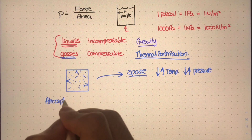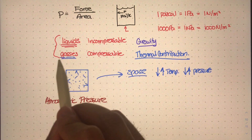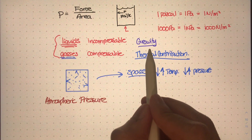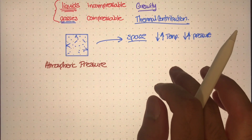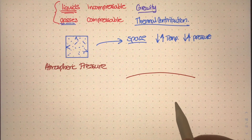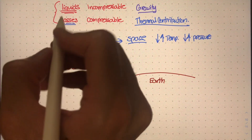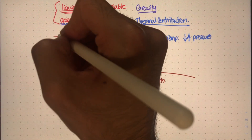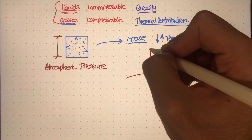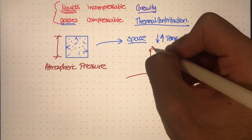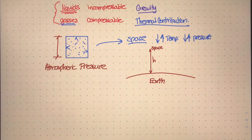For atmospheric pressure: I just told you that for gases, gravity really doesn't play too much of a factor if the container is relatively small. But if we look at our planet Earth — here is the surface of the Earth — this container we were studying had a height relatively small in comparison to the height from the surface of the Earth out into space. That height is obviously very, very big compared to the height of a typical container.